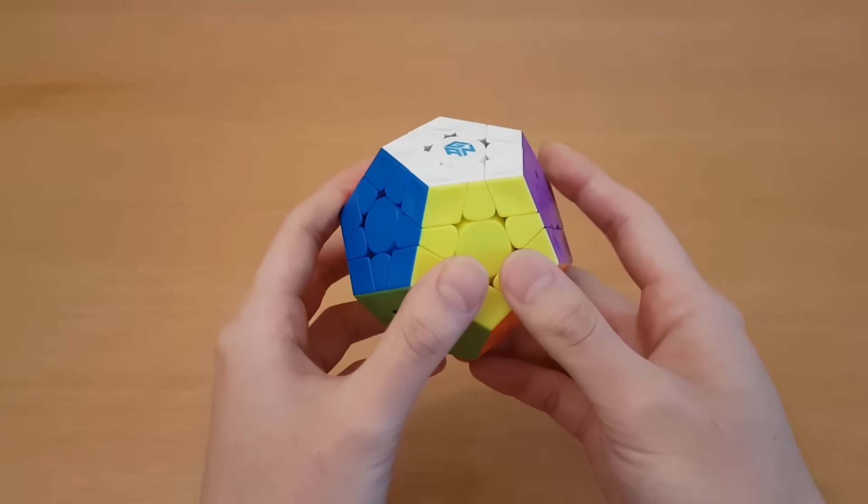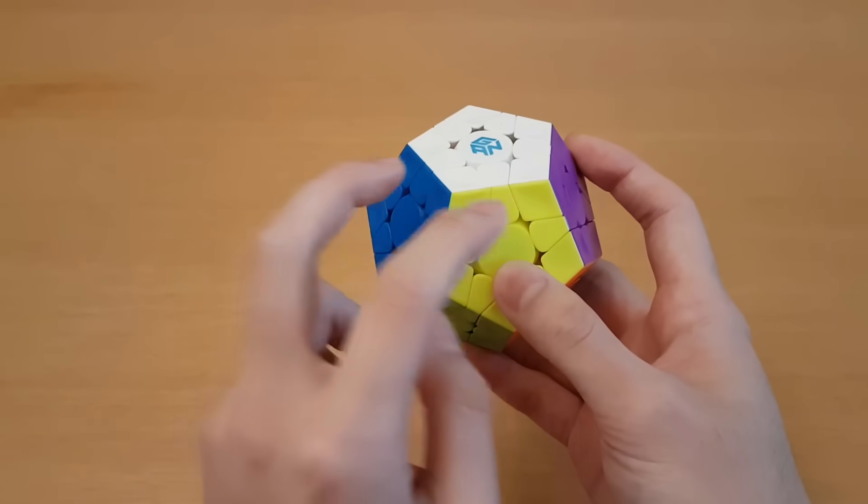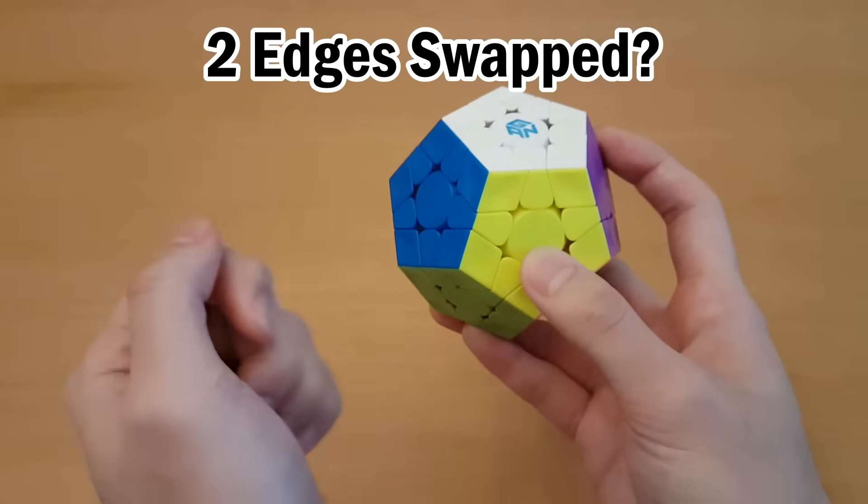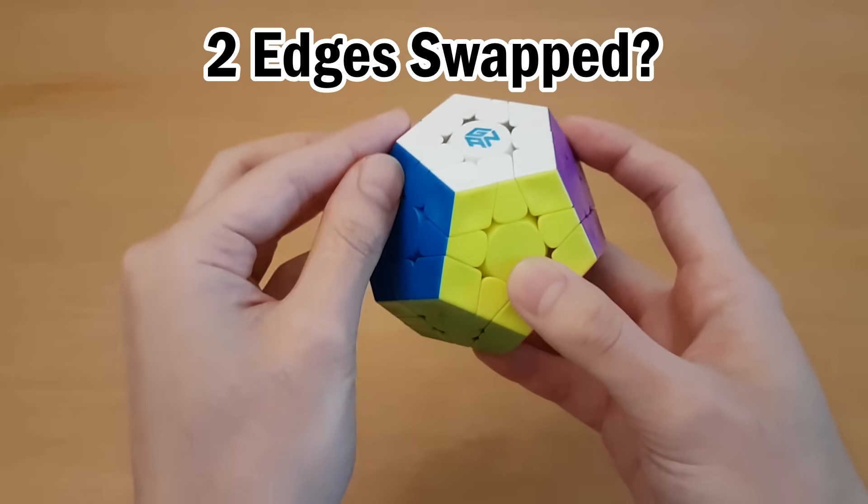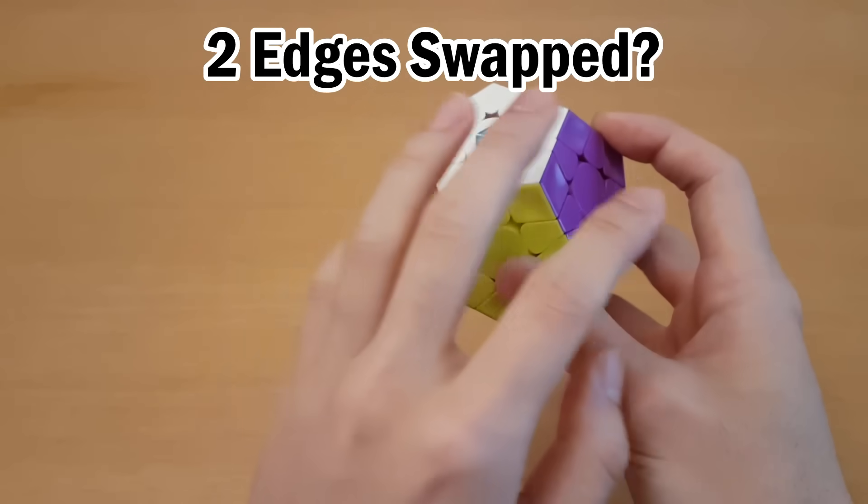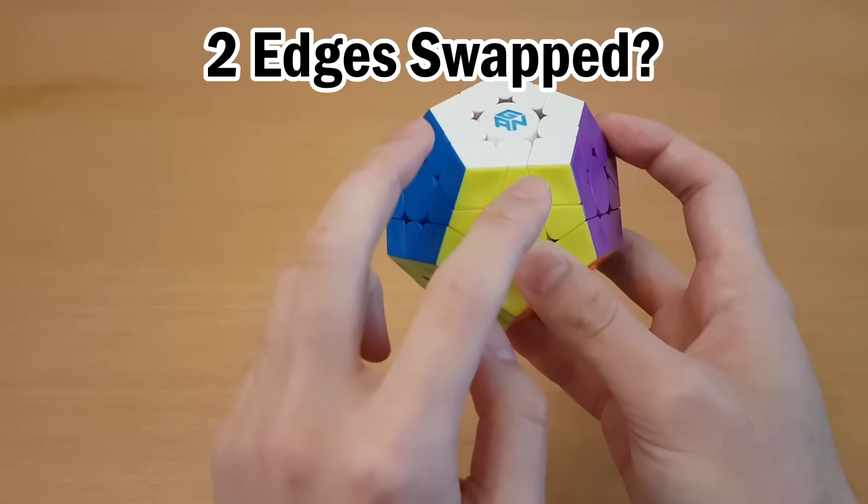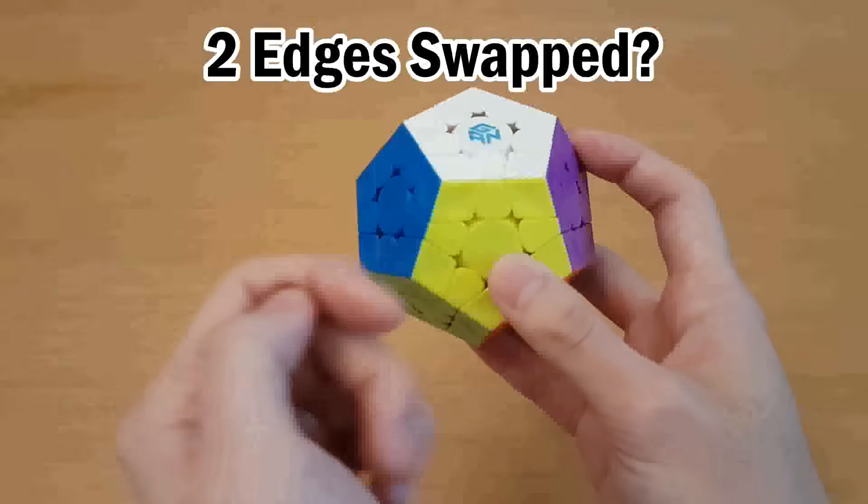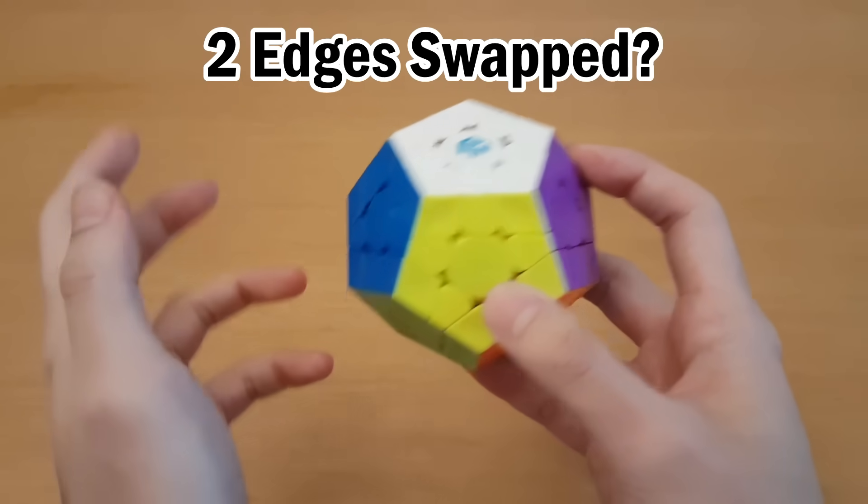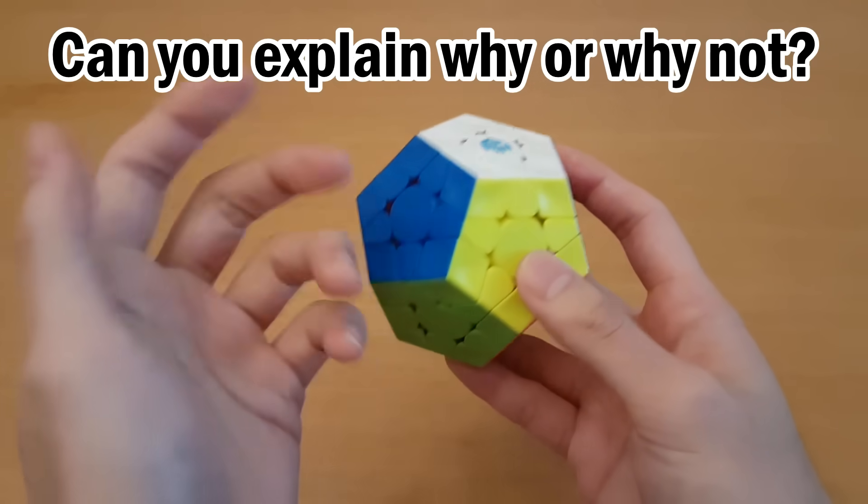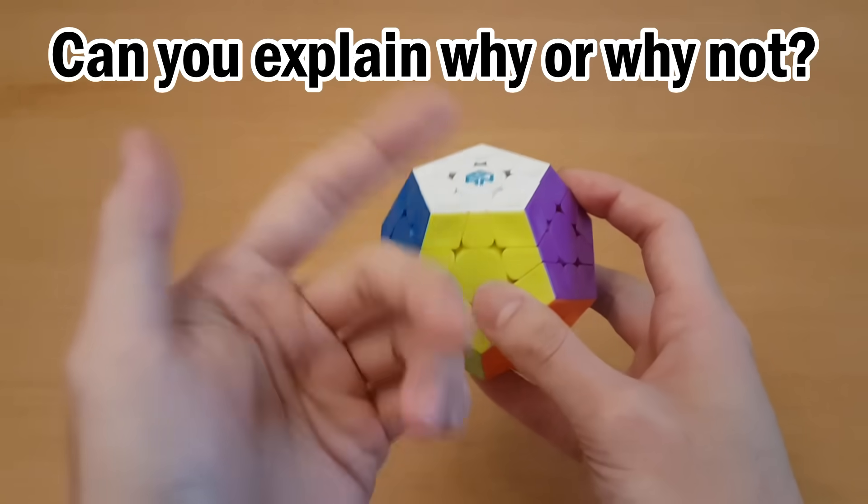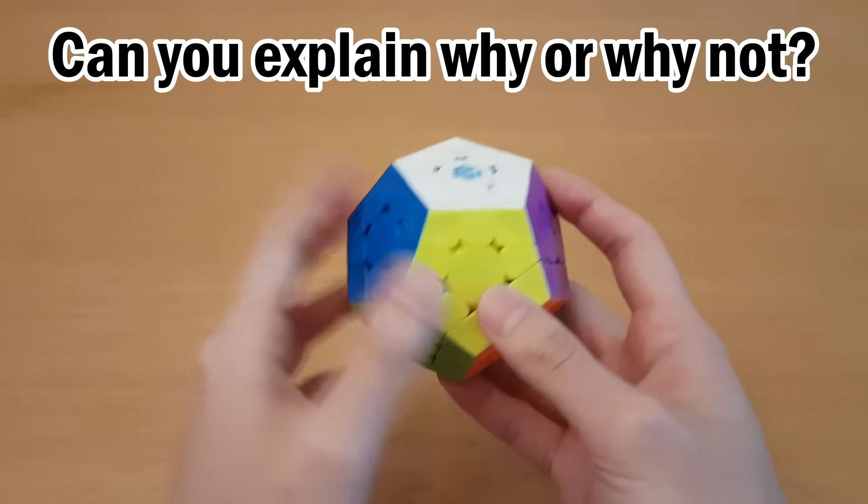Now before we end this video, I have a challenge for you guys. This is a Megaminx, and the question is, can you do just two edges swapped on a Megaminx? As in, obviously not taking pieces apart just doing outer turns. And every other edge needs to be solved, the corners, I don't care where they are, just two edges have to be in each other's locations. Is that possible on a Megaminx? And if it is, or if it isn't, can you explain why? So leave a comment if you know the answer, obviously explain why, because I know a lot of you guys know how to solve a Megaminx, so you know what the answer is.